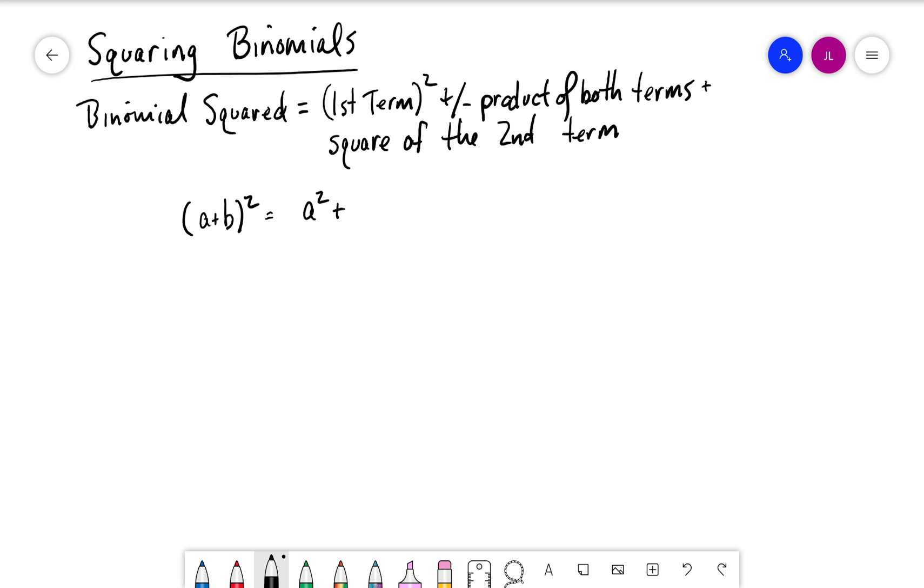I left something out - it's twice the product of both terms. So a times b is ab, but we want twice that, so 2ab, plus the square of the second term.